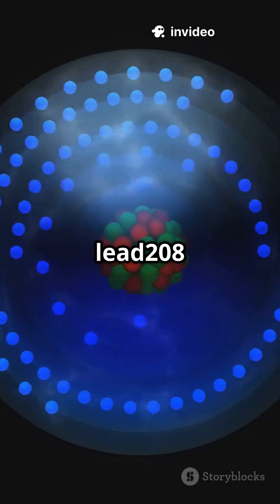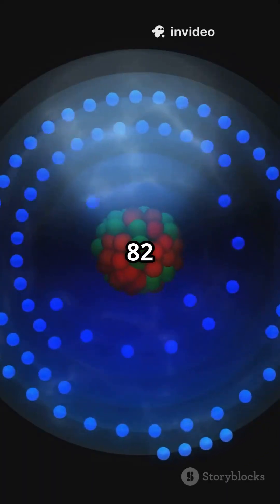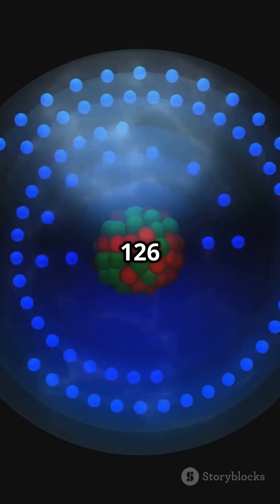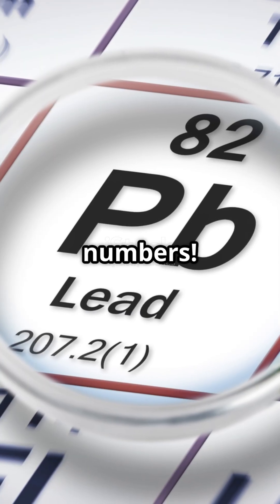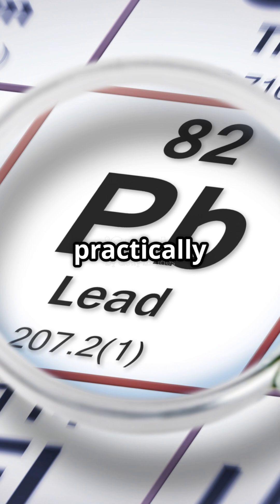Take lead-208. It's got 82 protons and 126 neutrons, both magic numbers. That's why it's practically immortal.